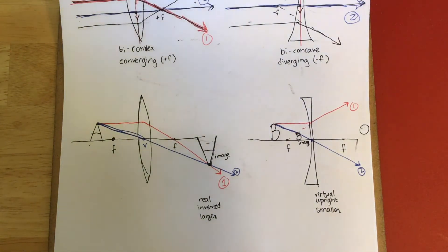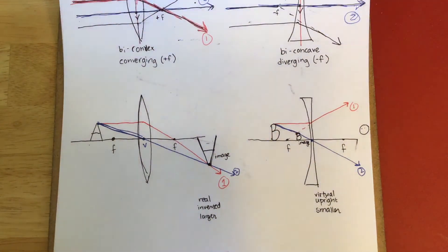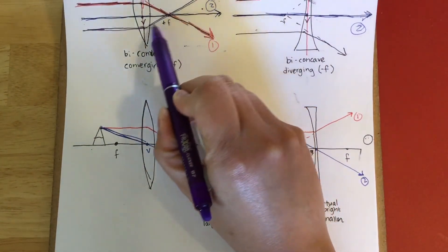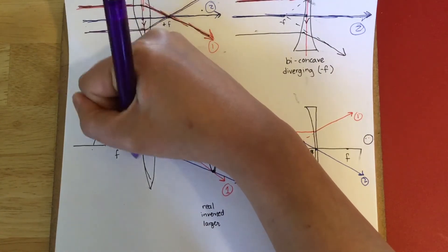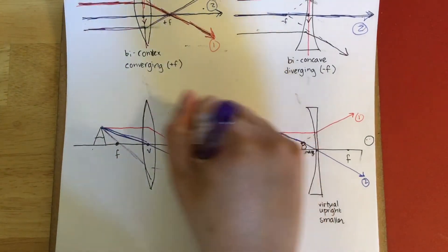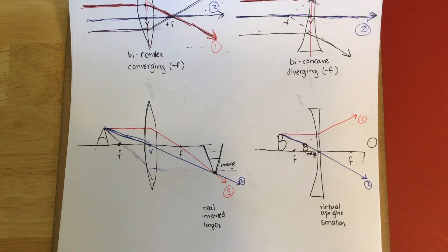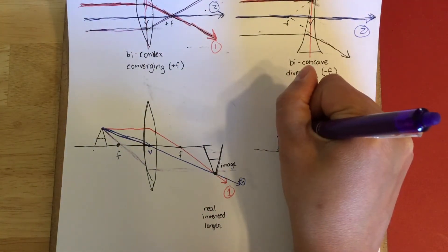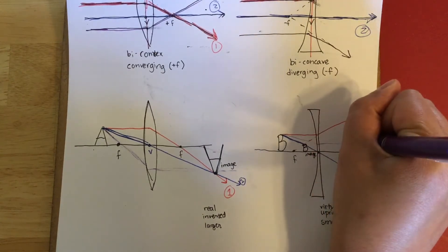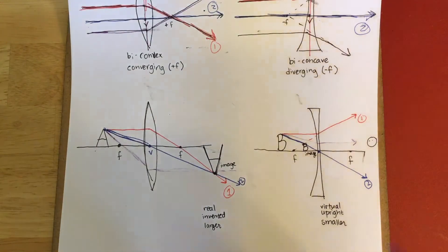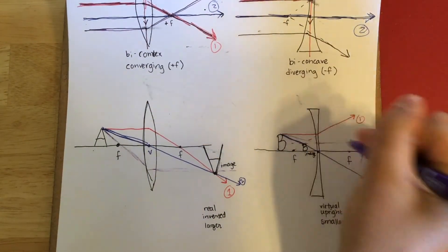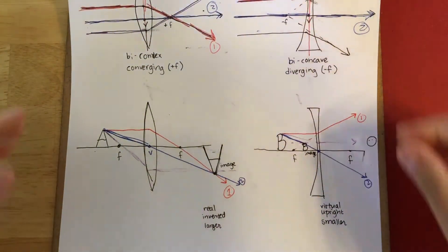What you should be able to do with lenses is draw ray diagrams — but since we probably won't ask you to draw them on the test, be able to interpret them. Rays one and two are the most important to know. If you want to be thorough, a third ray goes backwards through the focal point and comes out parallel. But since rays one and two intersect in the same place, two rays are sufficient to determine the location of your image.